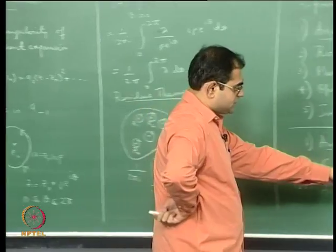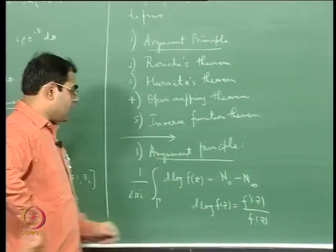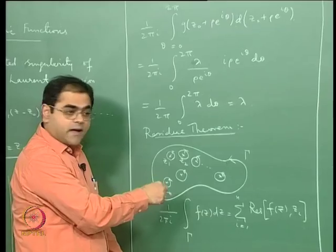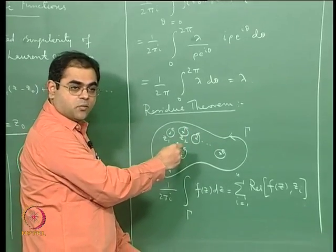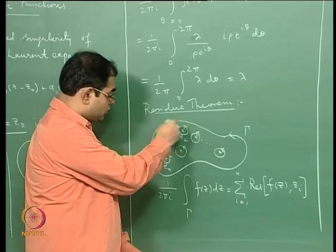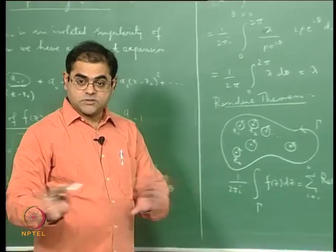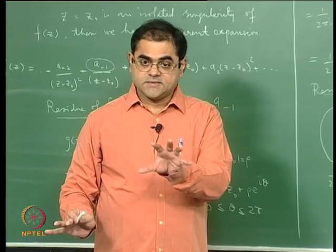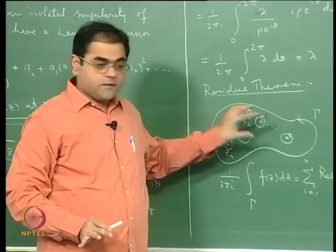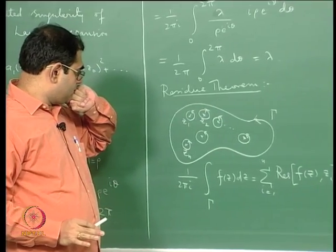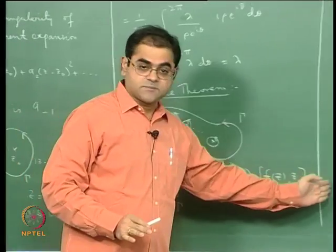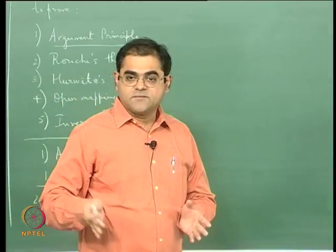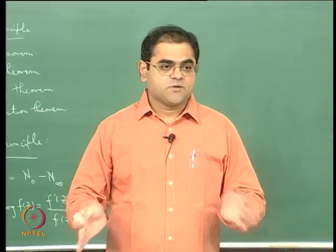The only poles for f'/f come from zeros of f inside the region and poles of f inside — neither should lie on the boundary. The boundary should be free from both zeros and poles, and there are only finitely many zeros and poles inside the domain. So computing the logarithmic integral, the argument principle tells you that you get the difference between the number of zeros and number of poles.